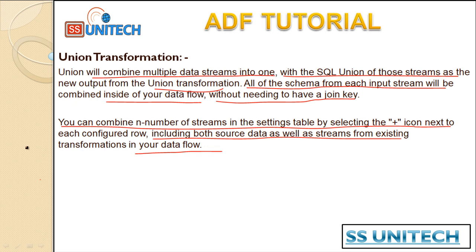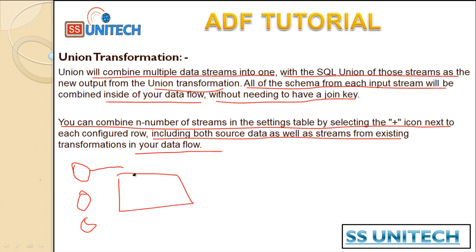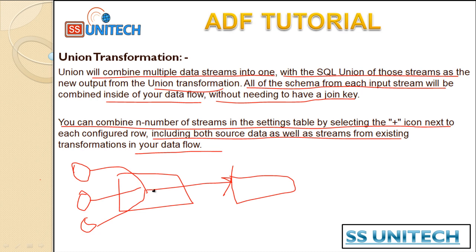So what is the union transformation? Union transformation is nothing but it will have, for example, one, two, or three input sources, and by using the union transformation we can combine all those sources into a single stream. This single stream will generate a new output. It is just appending the row values from each input stream.